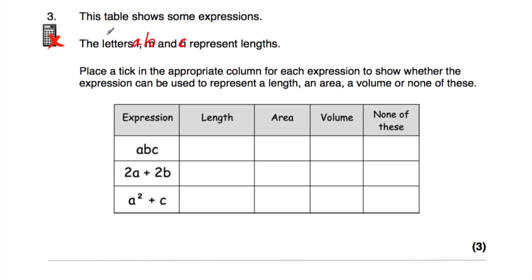Let's have a look at question number three. We've got a table where the letters A, B, and C represent lengths, and we're asked to tick whether each expression represents a length, an area, a volume, or none of those. ABC — a length times a length times a length — is a volume. 2A+2B: 2A is a length times 2, just a bigger length, and a length plus a length is a bigger length, so that's a length. A²+C: A² is A times A, a length times a length, which is an area. But area plus a length doesn't make sense — so it's none of those.